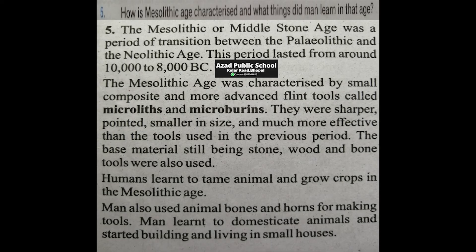How is the Mesolithic age characterized and what did men learn in that age? The Mesolithic or middle stone age was a period of transition between the Paleolithic and the Neolithic age. The period lasted from around 10,000 to 8,000 BC. The Mesolithic age was characterized by small, composite, and more advanced flint tools called microliths.